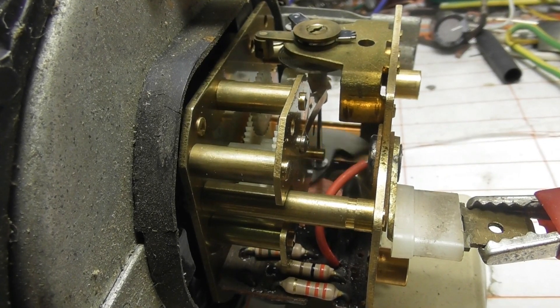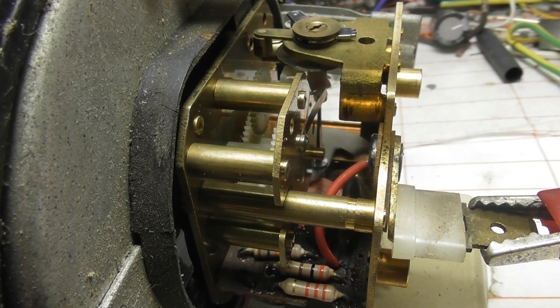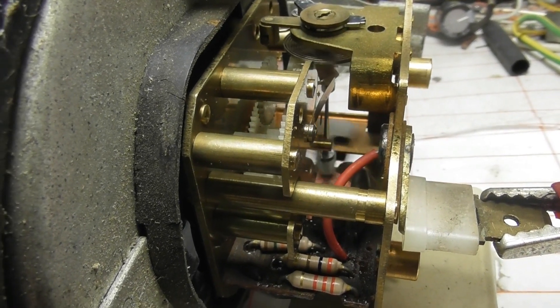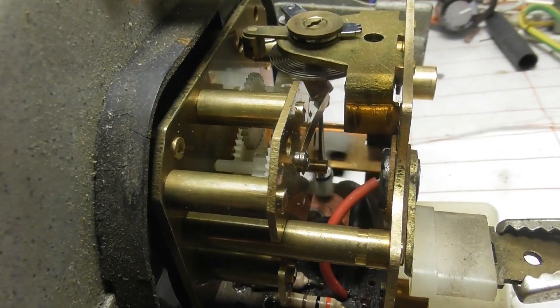This clock got one of these oscillating balance wheel escapements. Driven through a transistor and a couple of little magnets on the side. Plus the gear train.